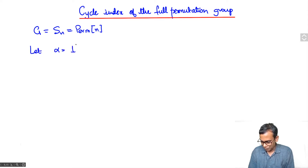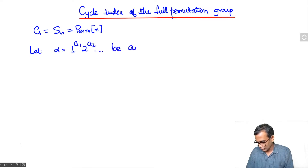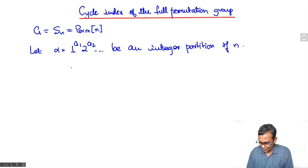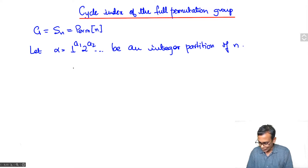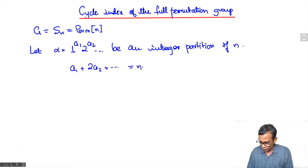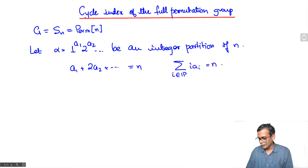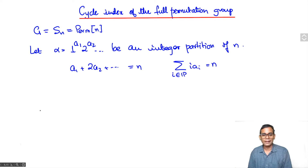Let alpha be a partition of N, written in exponential notation — an integer partition of N. This means that alpha has 1 occurring a_1 times, 2 occurring a_2 times, and so on. Saying that it is a partition of N means that a_1 + 2·a_2 + … equals N, or we can write: summation over i in P of i·a_i equals N. This is a finite sum, but we will just write i belongs to P.